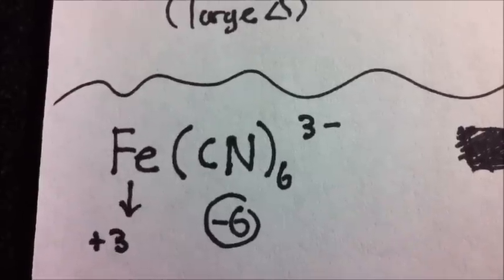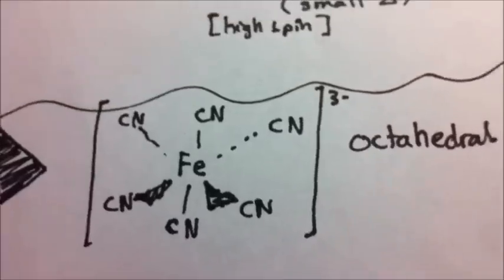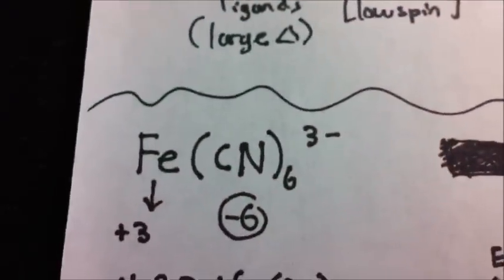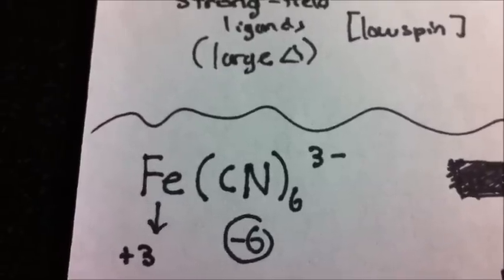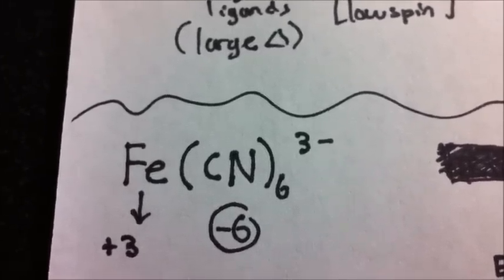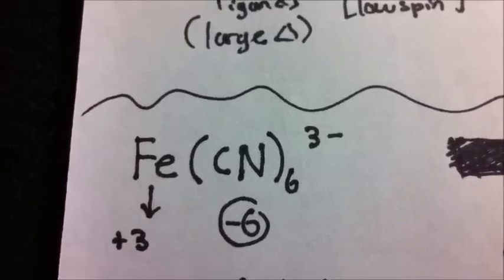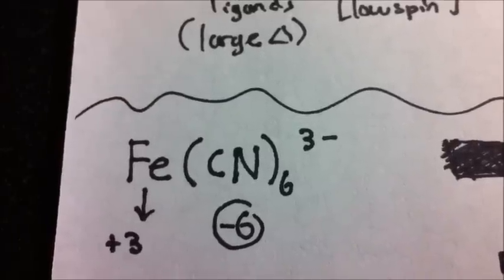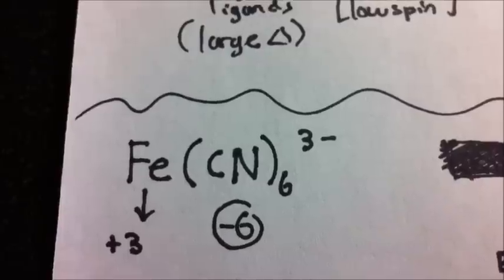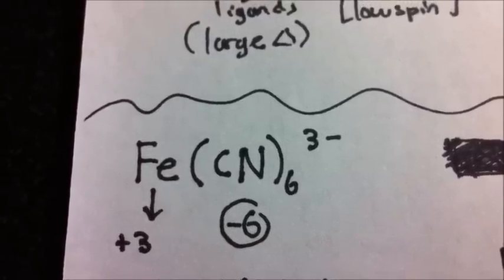Here we're given FeCN₆. If we look at it closely, we can deduce that it's an octahedral shape based on the number of ligands around it. First, we want to find the oxidation state of our metal ion. We have 6 cyanides, each with a negative 1 charge, giving a total of negative 6. We have a negative 3 charge overall, so our iron oxidation state will be plus 3.